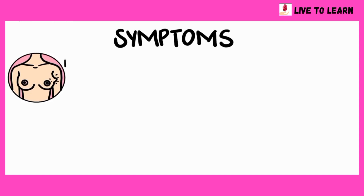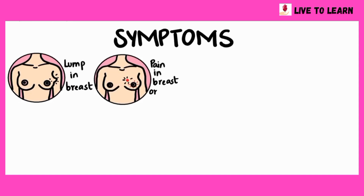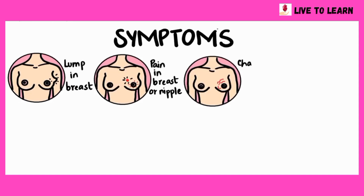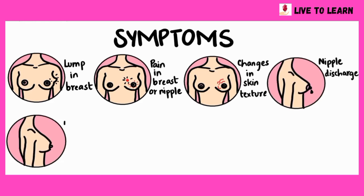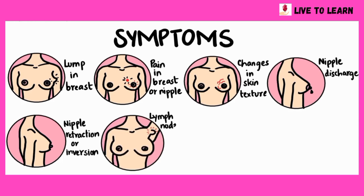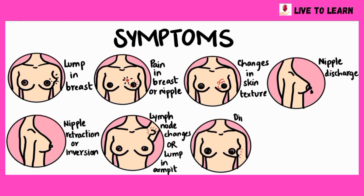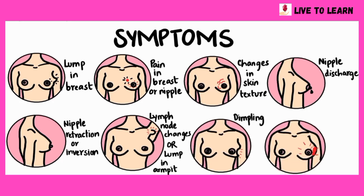The most common symptom of breast cancer is a lump in the breast. Other symptoms include pain in the breast or nipple, changes in skin texture, nipple discharge, nipple retraction or inversion, lymph node changes or a lump in the armpit, dimpling of the breast, and redness or swelling.